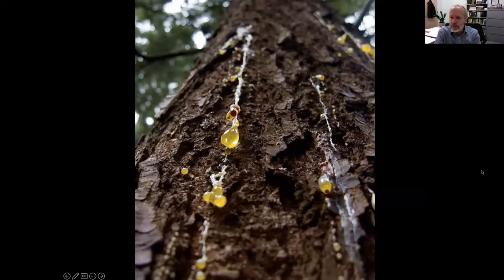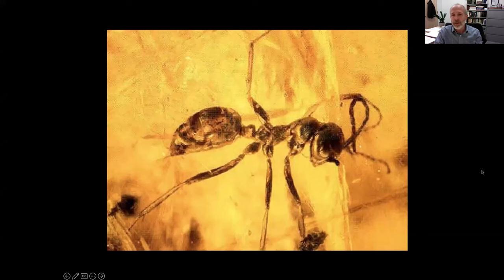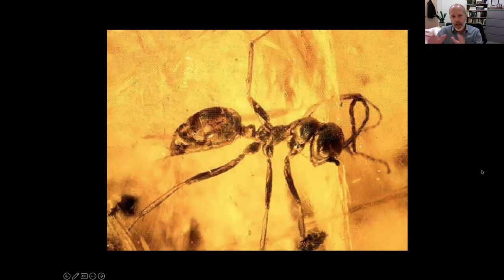The other major source of ant fossils is amber — the fossilized resin of various plants. Fossilized resins have a very different bias: here we typically find workers. Workers would be scurrying along tree trunks tens of millions of years ago and become entrapped in the resin, becoming an amber fossil. So we have these two separate types of deposits: impression or imprint fossils in rock, and amber fossils. I'm going to highlight both throughout tonight's talk.